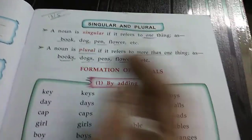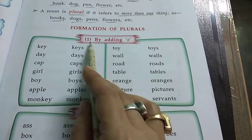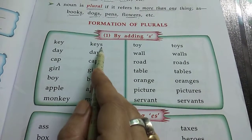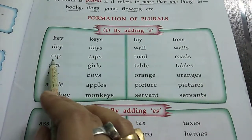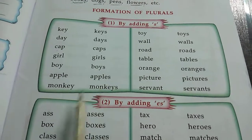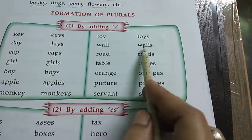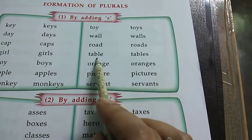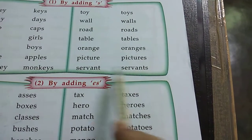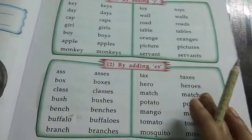Now let's understand the formation of plurals. By adding S — how will you make plural? By adding only S. See: key becomes keys, day becomes days, cap becomes caps, girl becomes girls, boy becomes boys, apple becomes apples, monkey becomes monkeys, toy becomes toys, wall becomes walls, road becomes roads, table becomes tables, orange becomes oranges, picture becomes pictures, servant becomes servants. We are making it plural by adding only S.